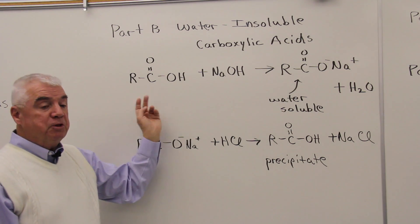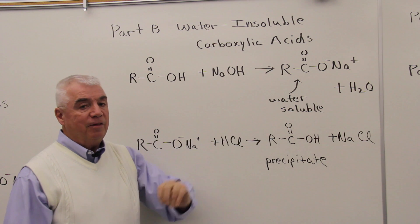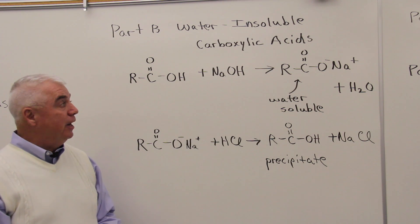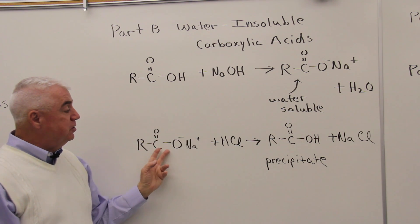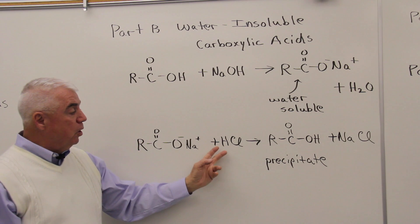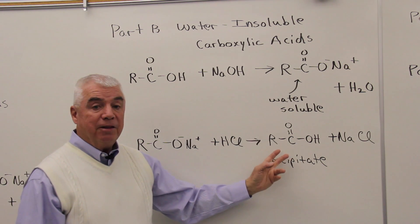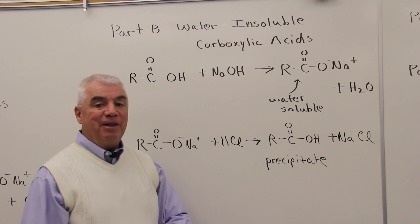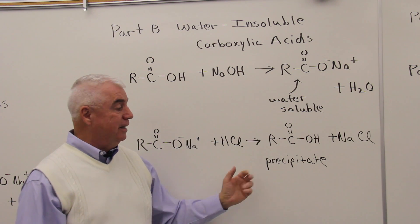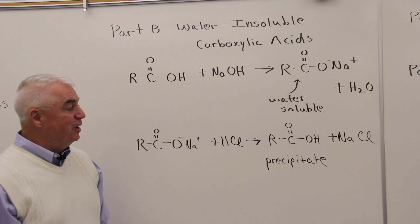So if you have an unknown substance, treat it with base and it goes into solution, that's a pretty good indication that you had a water insoluble carboxylic acid. We can reverse that process by taking the sodium salt, reacting it with hydrochloric acid, we get back the carboxylic acid. And if it's insoluble then that means it's going to precipitate, form a solid, the other product stays in solution.